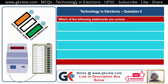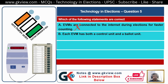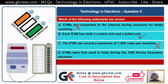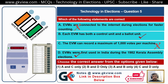Question Number 5. Which of the following statements are correct? A. EVMs are connected to the internet during elections for faster counting — this is wrong. B. Each EVM has both a control unit and a ballot unit — this is right. C. The EVM can record a maximum of 1000 votes per machine — this is wrong because it can record 2000 votes. D. EVMs were first used in India during the 1982 Kerala assembly elections — this is true. So B and D are correct; the answer is 2: B and D only.